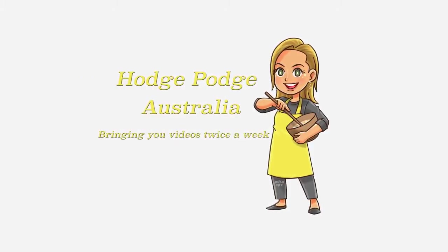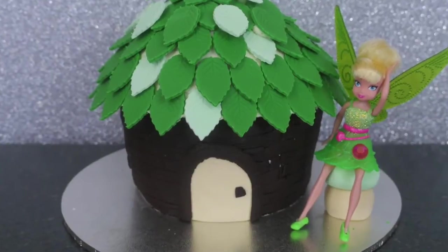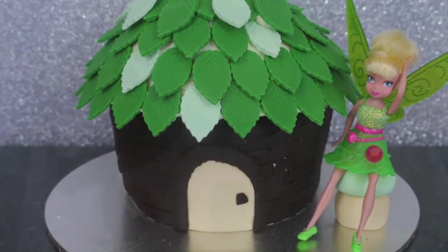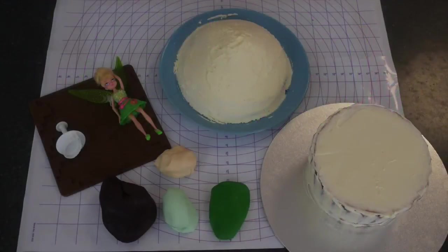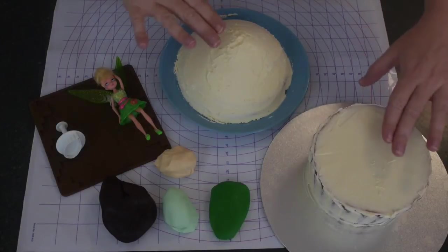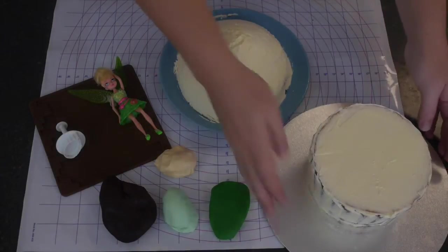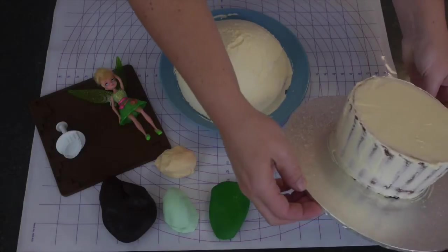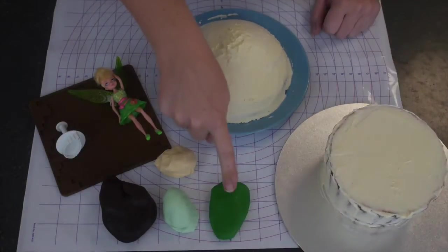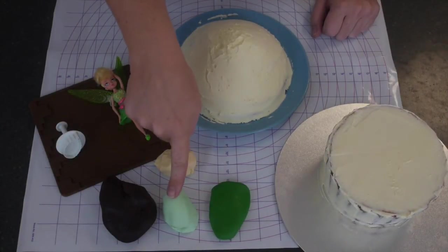Welcome to HodgePodge Australia. Today we are making a Tinkerbell cake using a giant cupcake pan. The things you need for a Tinkerbell cake are the giant cupcake which I have already crumb coated in buttercream. We have it stuck down on a cake board so you will need that.